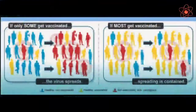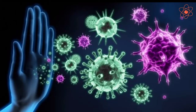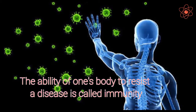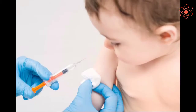Vaccines protect humans and other animals against several diseases by providing immunity against the concerned disease. The ability of one's body to resist a disease is called immunity. Immunity against a particular disease can be developed by a technique called vaccination.